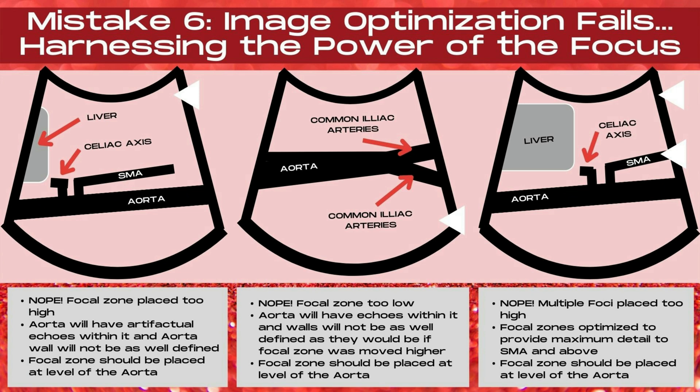Next, let's talk about harnessing the power of the focus — your focal zones. This is part of mistake number six: image optimization fails when imaging the aorta. In the image to the far left, the focal zone is placed too high. This causes the aorta to have artifactual echoes within it, and the aorta walls will not be as well defined as they would be if the focus were brought lower.